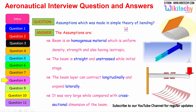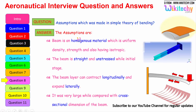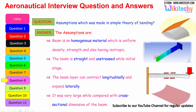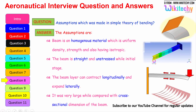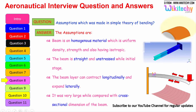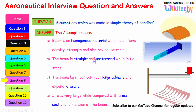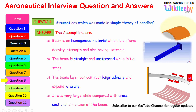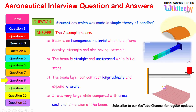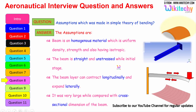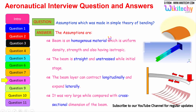What are the assumptions made in the simple theory of bending? The assumptions are: the beam is made of homogeneous material with uniform density, strength, and is isotropic. The beam is straight and unstressed in its initial state. The beam can contract longitudinally and expand laterally. The span of the beam is very large compared with its cross-sectional dimensions.